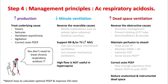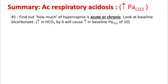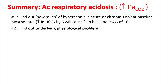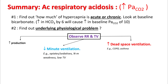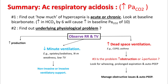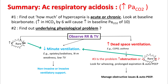You don't have to treat chronic respiratory acidosis. In summary: Step 1, find out how much of the hypercapnia is acute and how much is chronic — look at the baseline bicarb. Step 2, find out the underlying physiological problem by observing respiratory rate and tidal volume. Is the problem increased production, decreased minute ventilation, or increased dead space ventilation? If you have decreased minute ventilation, use invasive or non-invasive ventilatory support. If you have increased dead space ventilation, figure out if it is obstructive or decreased perfusion — look for wheezing, prolonged expiration, and auto-PEEP. Patients with increased production or decreased perfusion rarely cause hypercapnia unless they have associated decreased minute ventilation.